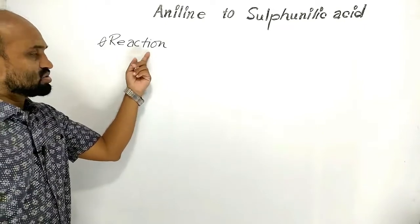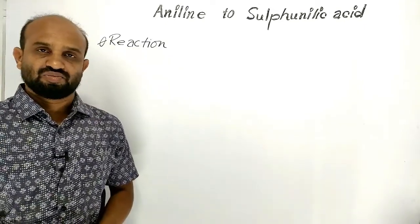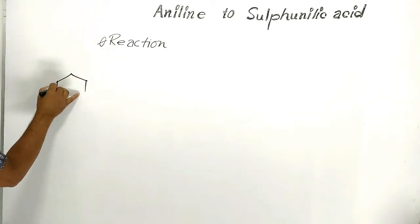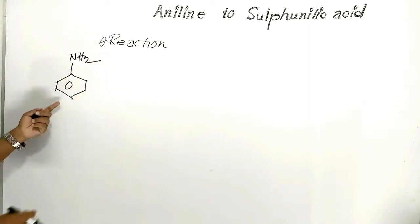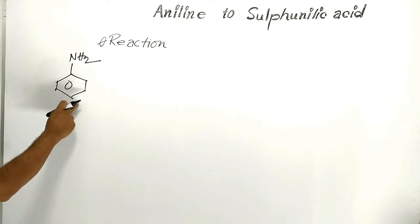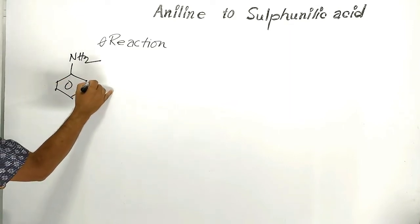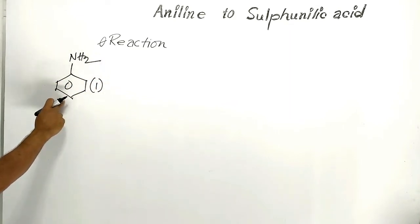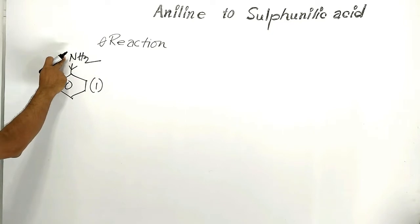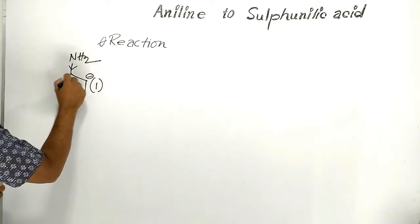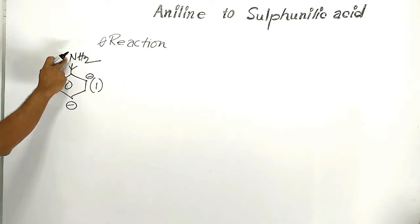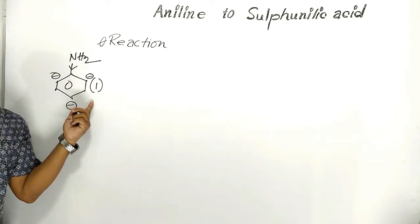The next point is the reaction to produce sulfonylic acid from aniline. Aniline, also called aminobenzene or phenylamine, is an oily liquid. The amino group is an electron-donating group which increases electron density at ortho and para positions. That is, the amino group is an ortho-para directing group towards the electrophile.